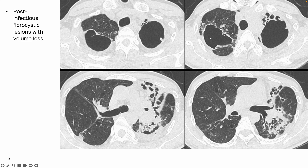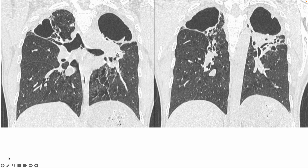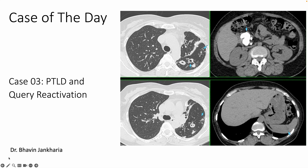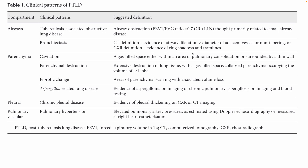These are the post-infectious fibrocystic lesions with bronchiectasis, extensive volume loss, large cavities, etc., also very well seen on the coronal images. I talked about this in the third case three weeks ago, where we had PTLD and suspected reactivation. PTLD, or post-tuberculosis lung disease, is the term we should be using for all such patients who have evidence of old TB in the lungs on CT.